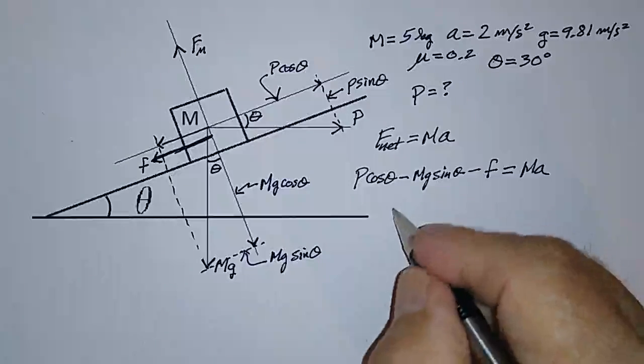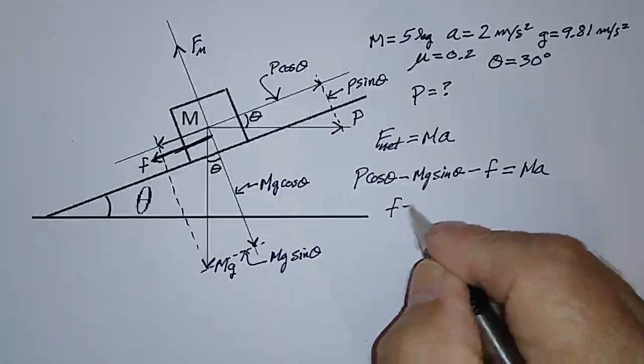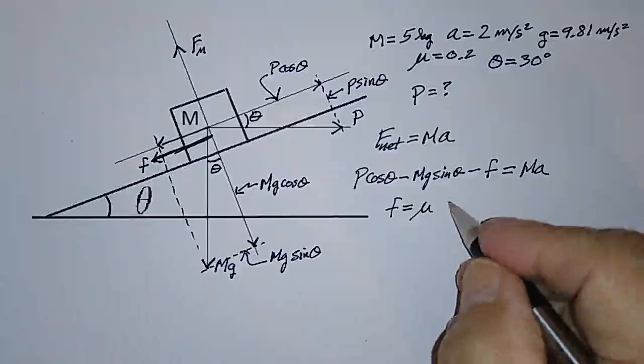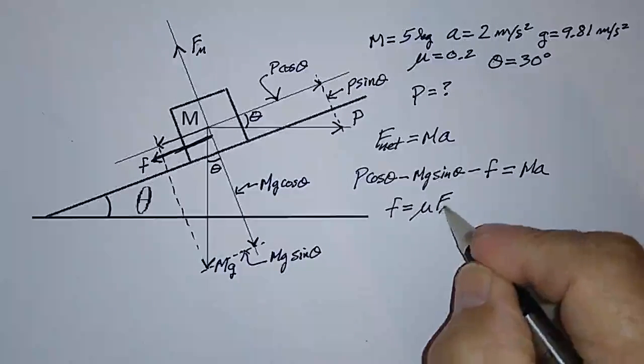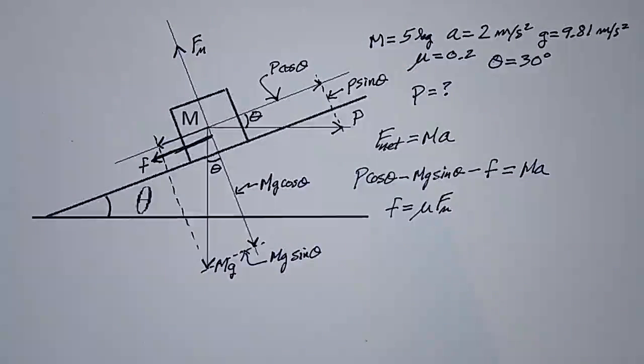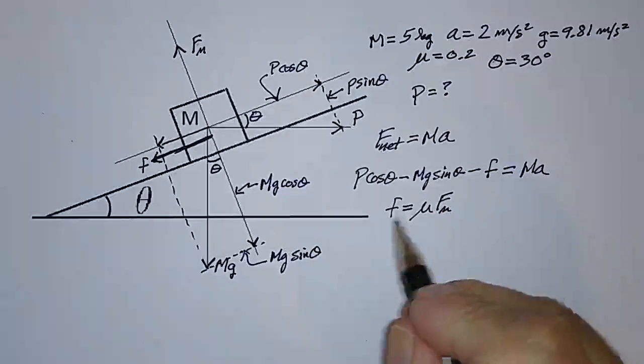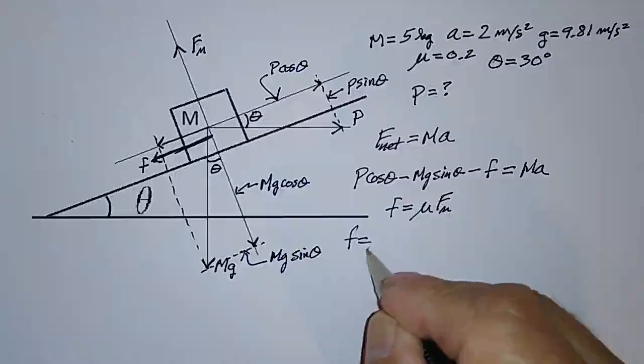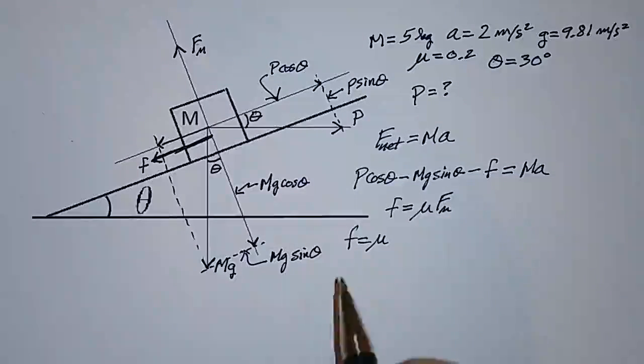We also know that the frictional force F is equal to mu, the coefficient of sliding friction, times the normal force. So if we know what the normal force is, then we'll have this equation complete. So I'll write that as F is equal to mu times the normal force.